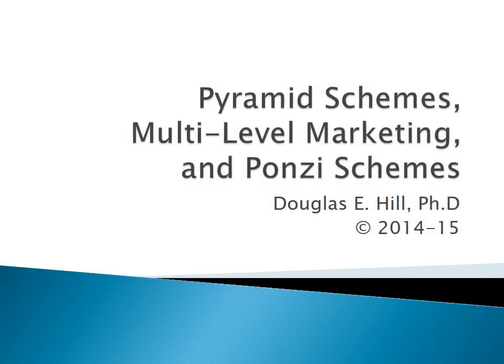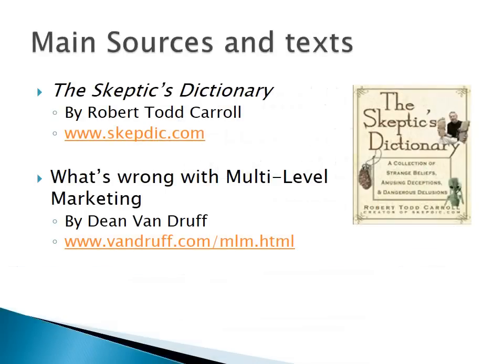This lecture is on Pyramid Schemes, Multi-Level Marketing, and Ponzi Schemes for Philosophy G-115 at Golden West College. The main sources and texts that we're using are the Skeptics Dictionary — you've done the readings for the material on the Skeptics Dictionary — and another great source is an article called 'What's Wrong with Multi-Level Marketing' by Dean Vandruff.